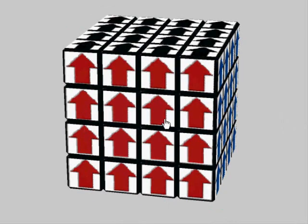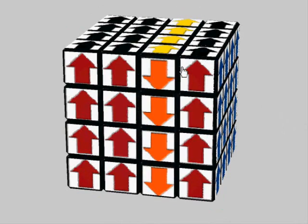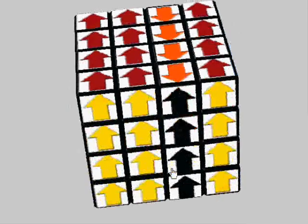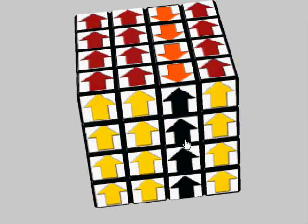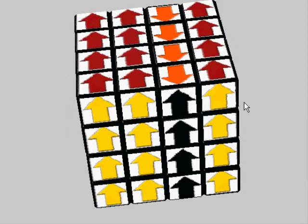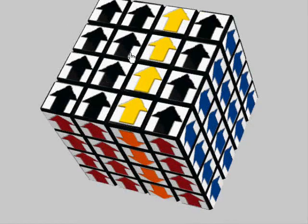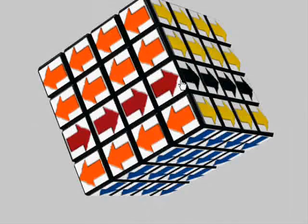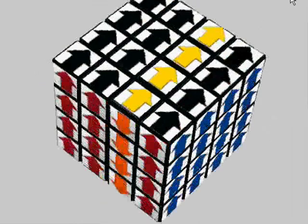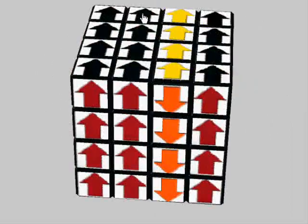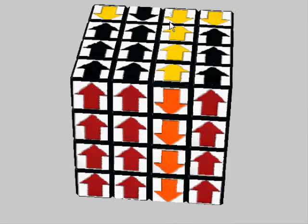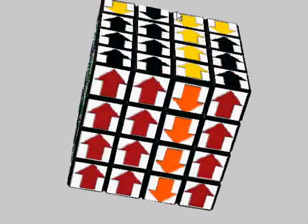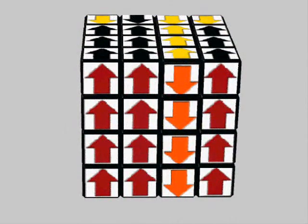Starting with a clean cube and executing the first setup move, it places a 1x2 center block down in the position where whatever center block is here will be swapped — so black will swap with black. At the same time, R2 also moves the red and black edge down. Finishing with B2 puts it directly opposite, which matches the algorithm.